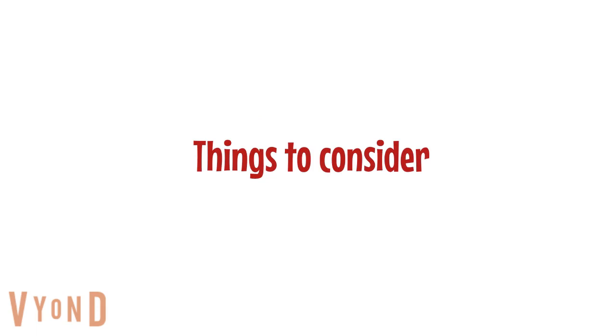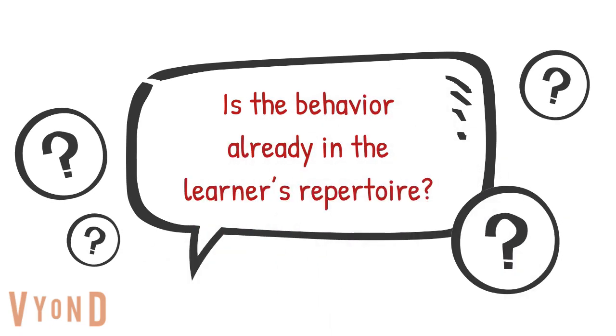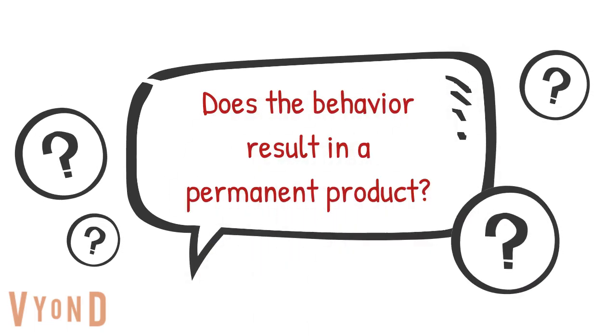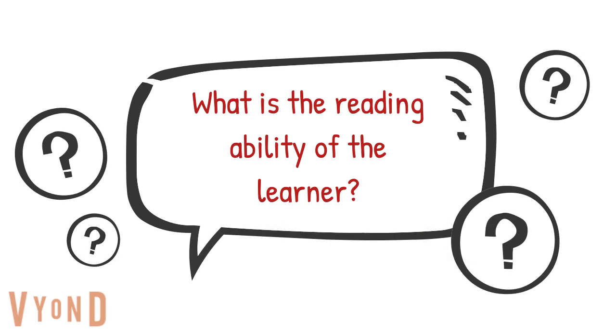Things to consider when writing a contingency contract: is the behavior already in the learner's repertoire, is it something they can already perform? Does the behavior result in a permanent product — is it something we can measure after the behavior has occurred? And what is the reading ability of the learner, and if they can't read, how else can we present the contract to them?